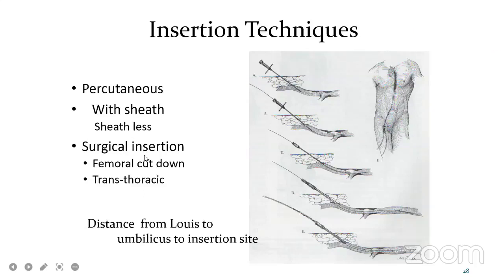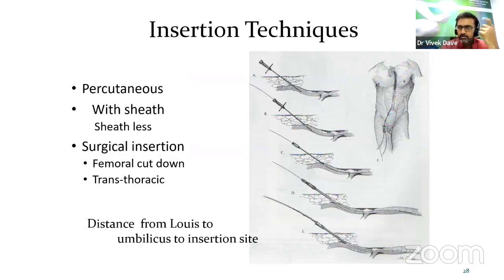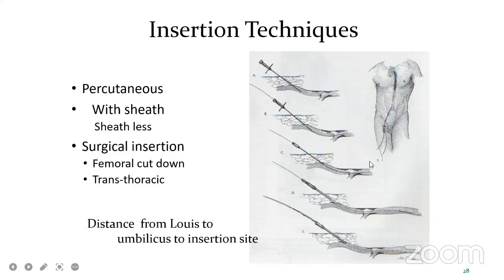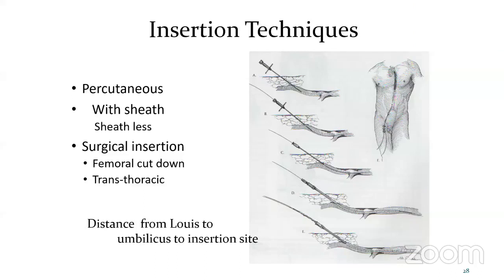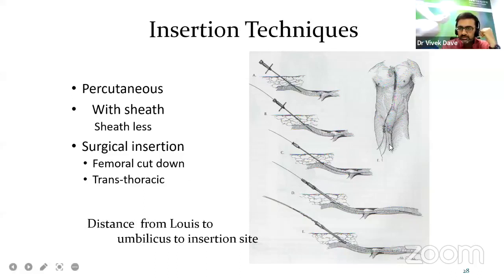Insertion technique is percutaneous. The femoral artery is punctured — the same way as invasive blood pressure monitoring. You secure the femoral artery and pass the guide wire through it. You can see the balloon inflated, and the tip is supposed to be just distal to the subclavian artery. If you go too far, it will decrease or hamper blood flow from the aorta to the subclavian.